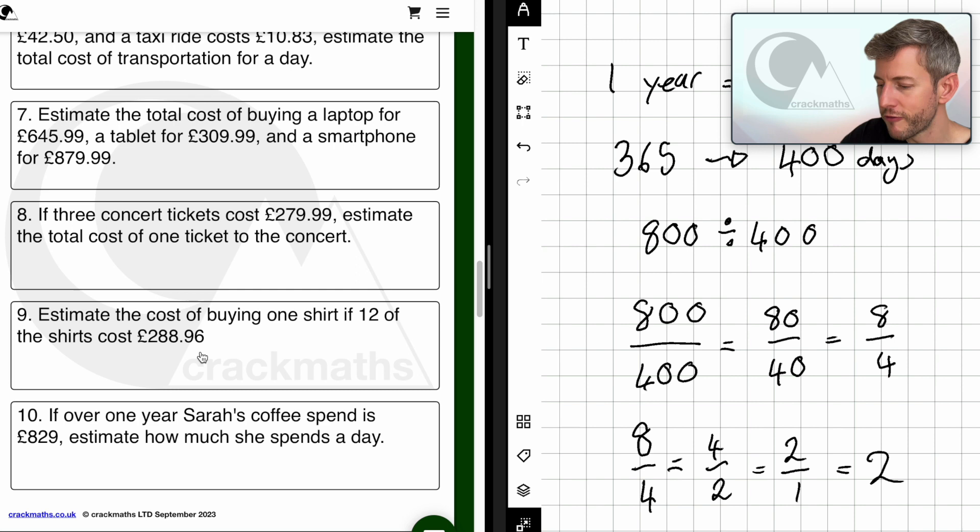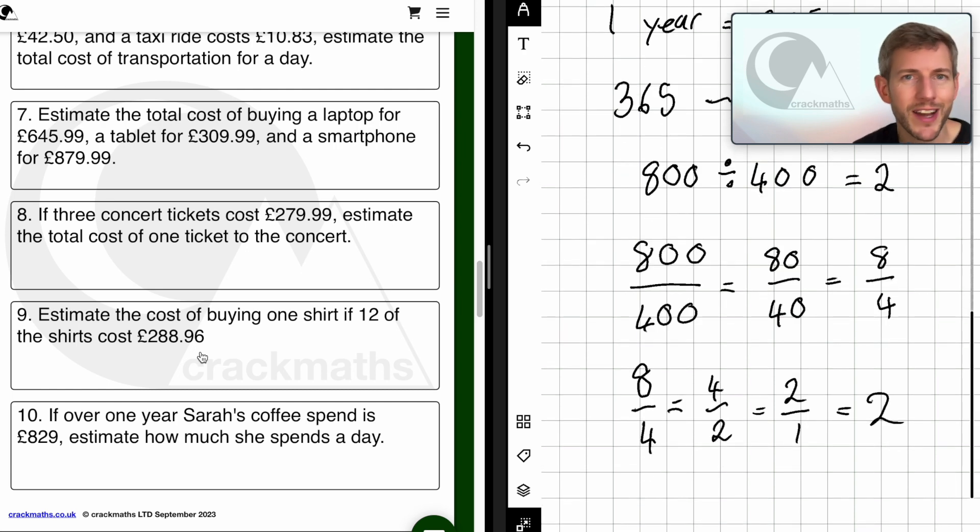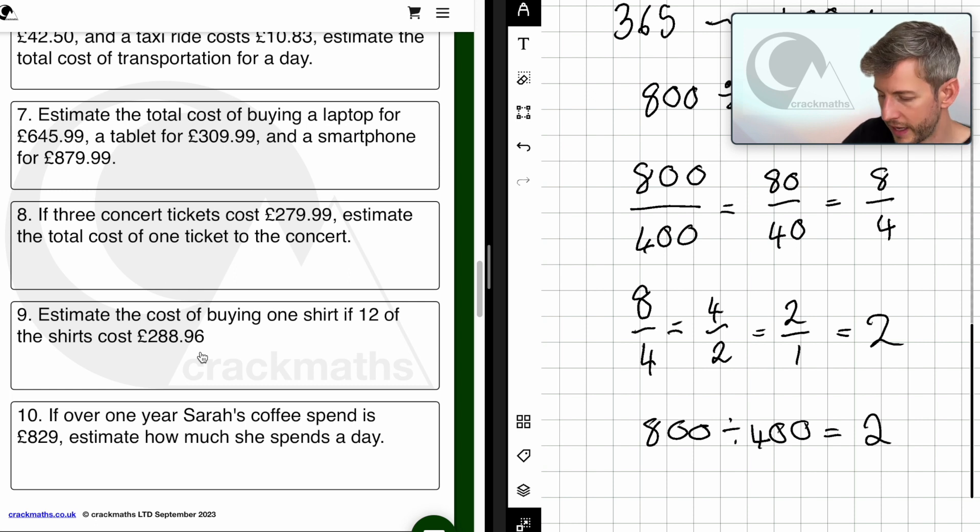So you might have known that 800 divided by 400 is 2, or you might have needed to work it out. Or in this question, it might be that you have access to a calculator, in which case you would have simply typed in this calculation here, 800 divided by 400, and you would have found out that that equals 2. So let's have a look about this 2. Just look back at the question to find out what the 2 means, because we do need to answer the question properly, because it's a worded question. So it says if over one year Sarah's coffee spend is £829, estimate how much she spends a day. Well, this here is a 2, which means £2. So we'd finish our question off by making a note to say £2 a day.